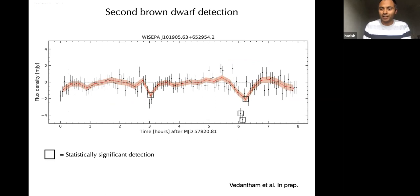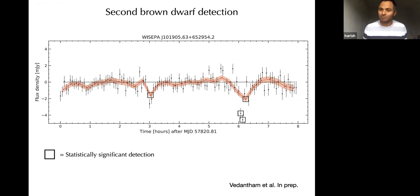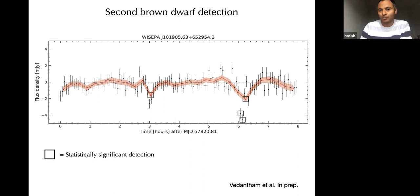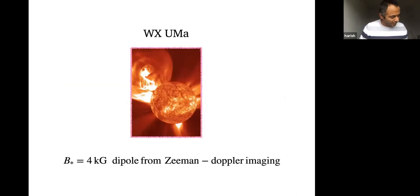We've since found another object — already a known brown dwarf, but interesting because the flux density versus time shows clear pulses. That means we can start timing those pulses to figure out the rotation rate and whether there's a companion object inducing the radio emission, just as Io induces Jupiter's emission. We can time these pulses and look for periodicity or preference to certain longitudes — exactly the same technique used decades ago to establish Io's control of Jupiter's emission.